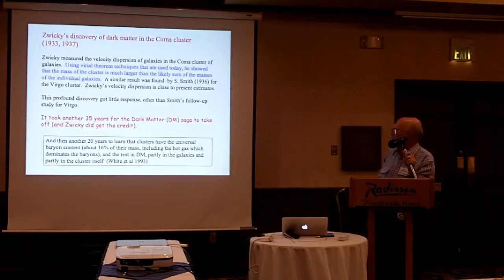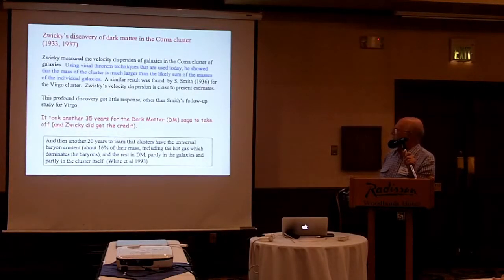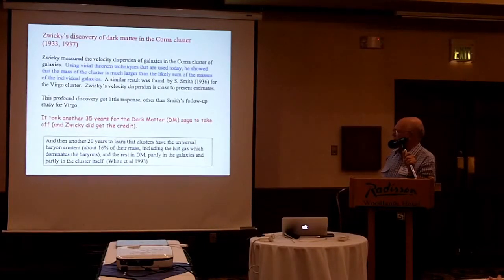Zwicky's discovery of dark matter in Coma involved measuring the velocity dispersion of galaxies in the Coma cluster. He used techniques that are the same as what we use now — the virial theorem — to show that the mass of the Coma cluster was much in excess of the likely sum of the masses of the individual galaxies. A similar result came from Sinclair Smith a few years later in the Virgo cluster. Zwicky's velocity dispersion, and Smith's also, are close to present estimates for the cluster.